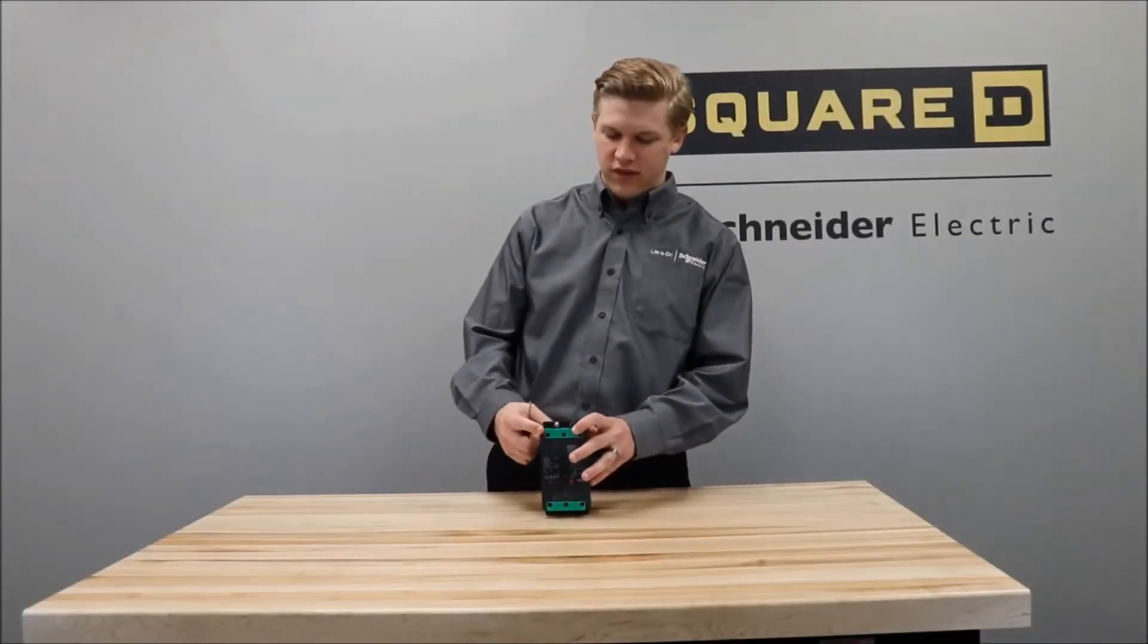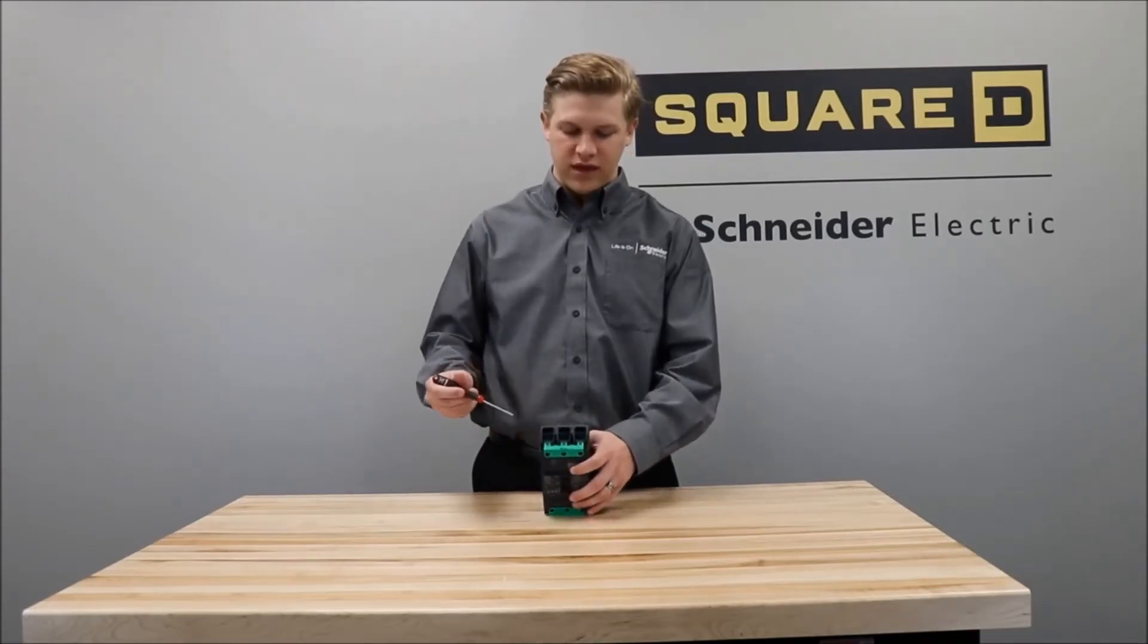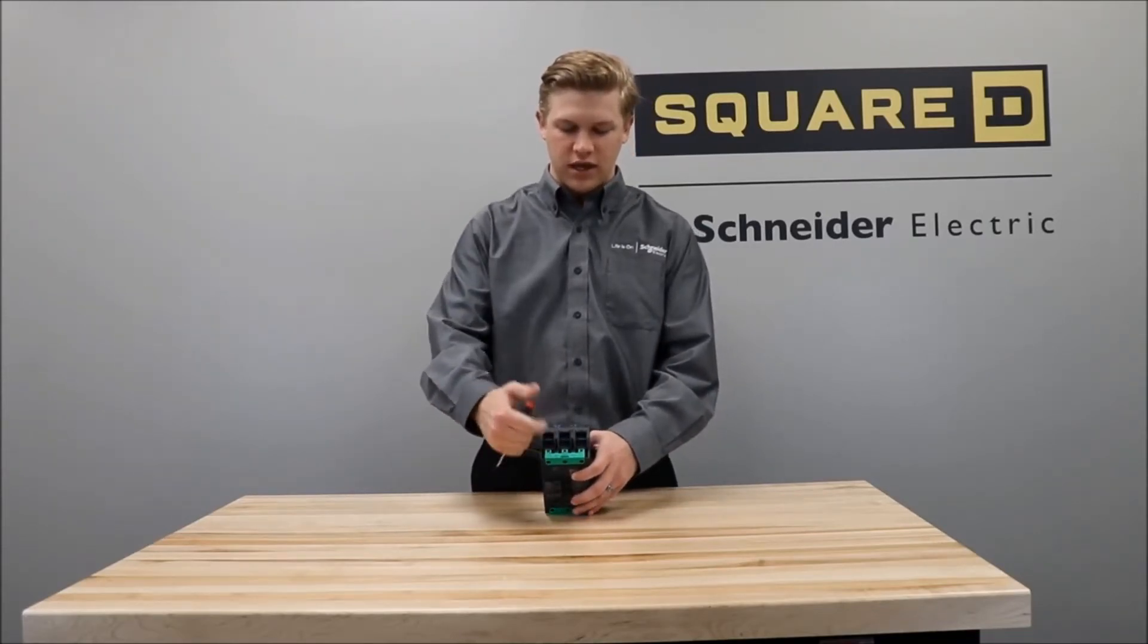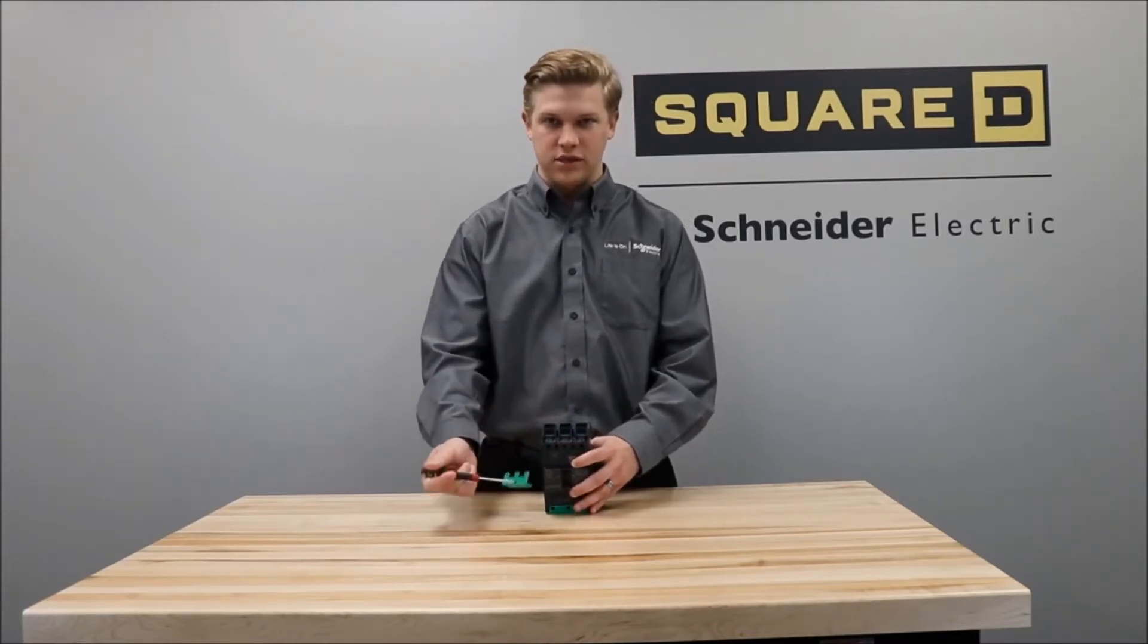First, you'll remove the green connection system cover by putting a flathead screwdriver in this slot, and then working it until it comes off of the breaker, like so.